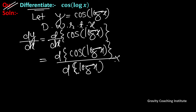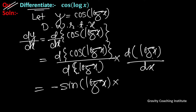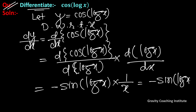We multiply by d(log x)/dx. We know that the derivative of cos x equals minus sin x, so we get minus sin(log x). And since the derivative of log x equals 1/x, the final answer is minus sin(log x) upon x.